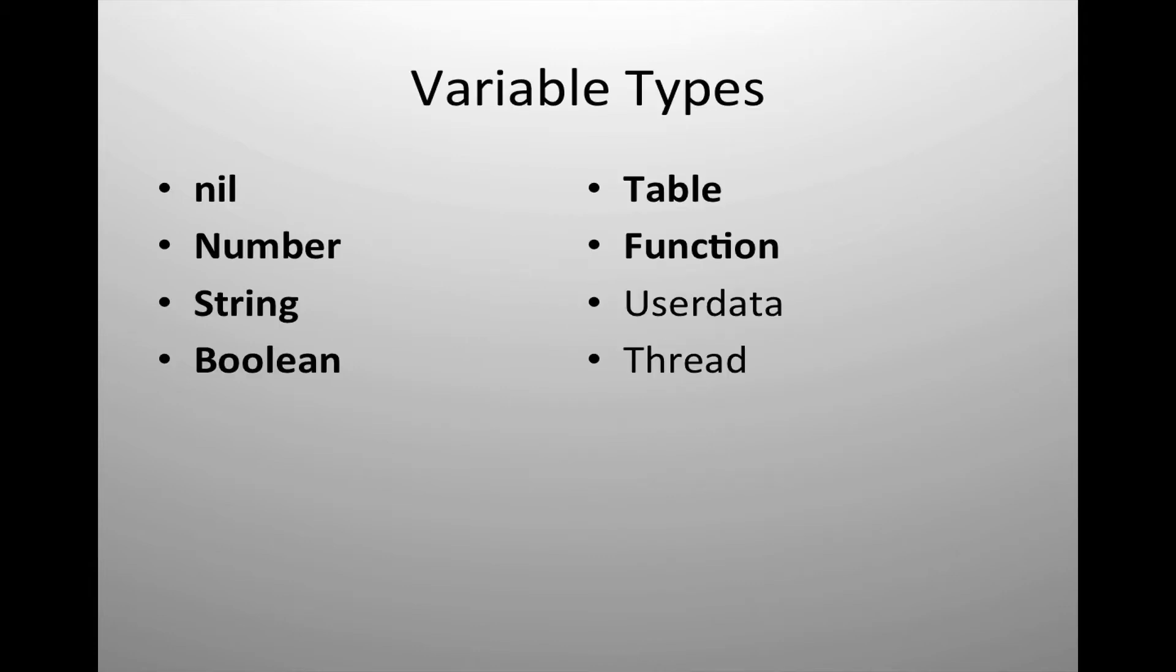We have eight default variable types built into Lua: nil, number, string, boolean, table, function, user data, and thread. It should be noted that Lua is a dynamically typed language. In other words, you don't have to explicitly declare a variable type when creating your variables. You just simply declare your variable and it'll automatically type the variable to the correct type.